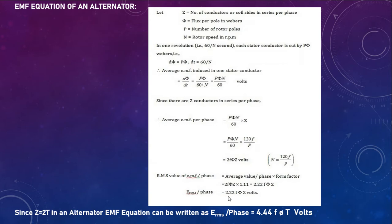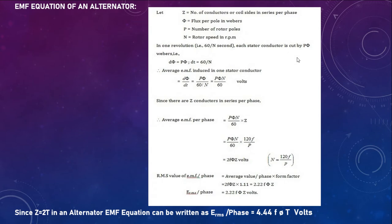EMF equation of an alternator: let Z = number of conductors or coil sides in series per phase, φ = flux per pole, P = number of rotor poles, N = rotor speed in RPM. In one revolution, each stator conductor is cut by P×φ webers. Since one revolution takes 60/N seconds, dφ = P×φ, and dt = 60/N seconds.